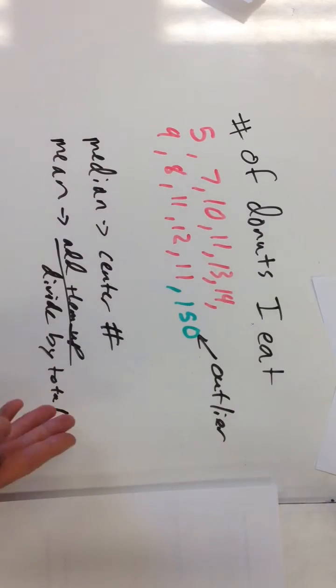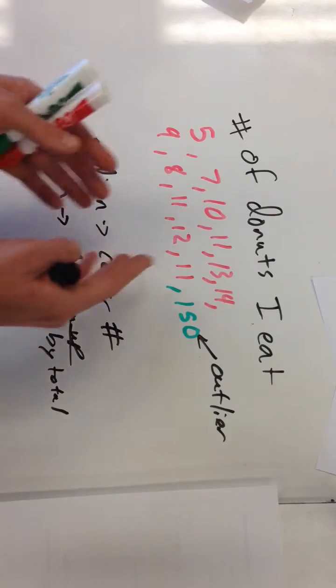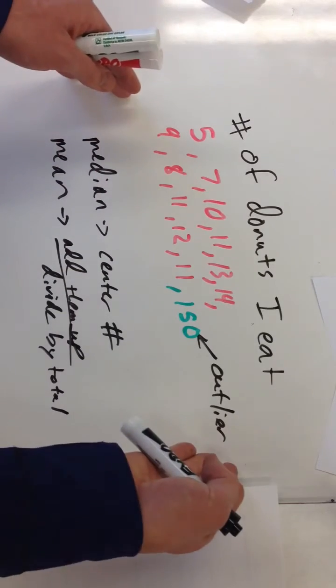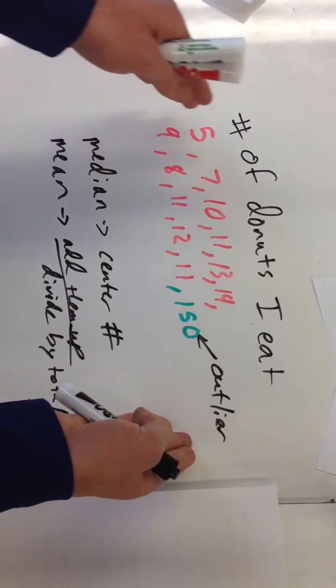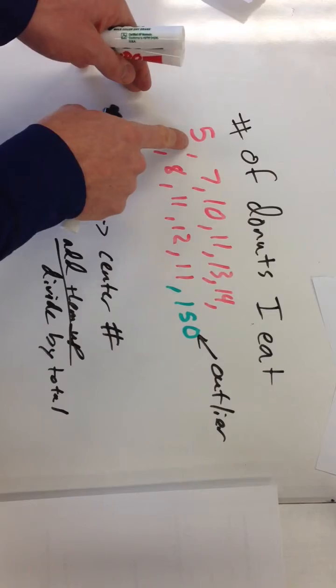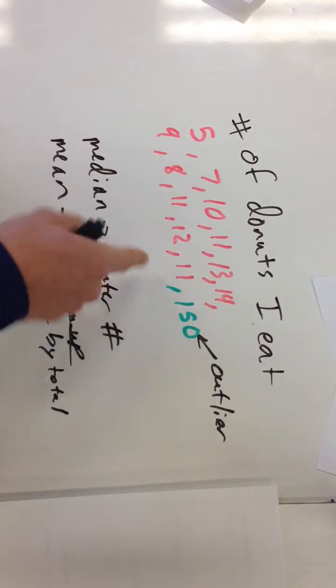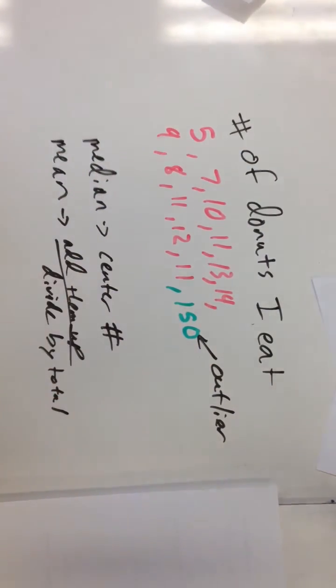The median is really good because it's outlier proof. So what the median says is let's line them all up and let's cross off that gorge month with Joe and let's cross off that month I only ate 5 and let's still find that middle number. So that outlier is crossed out. So the median is kind of outlier proof.